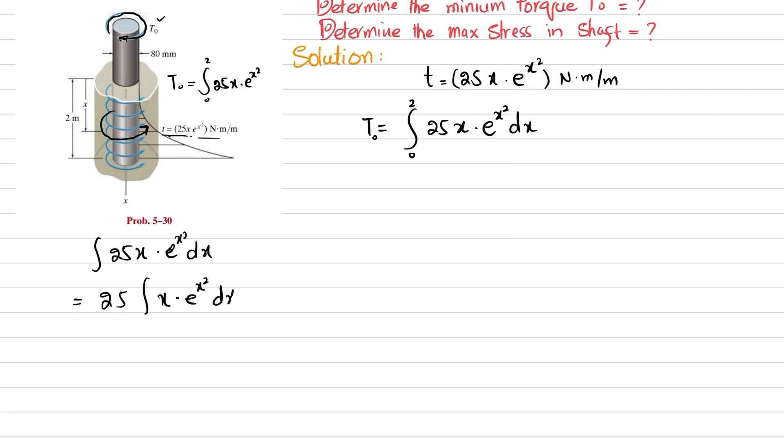Let's take x² = u. So du will be equal to 2x dx. Here you can see we have x dx, so you have to divide it by 2 on both sides.